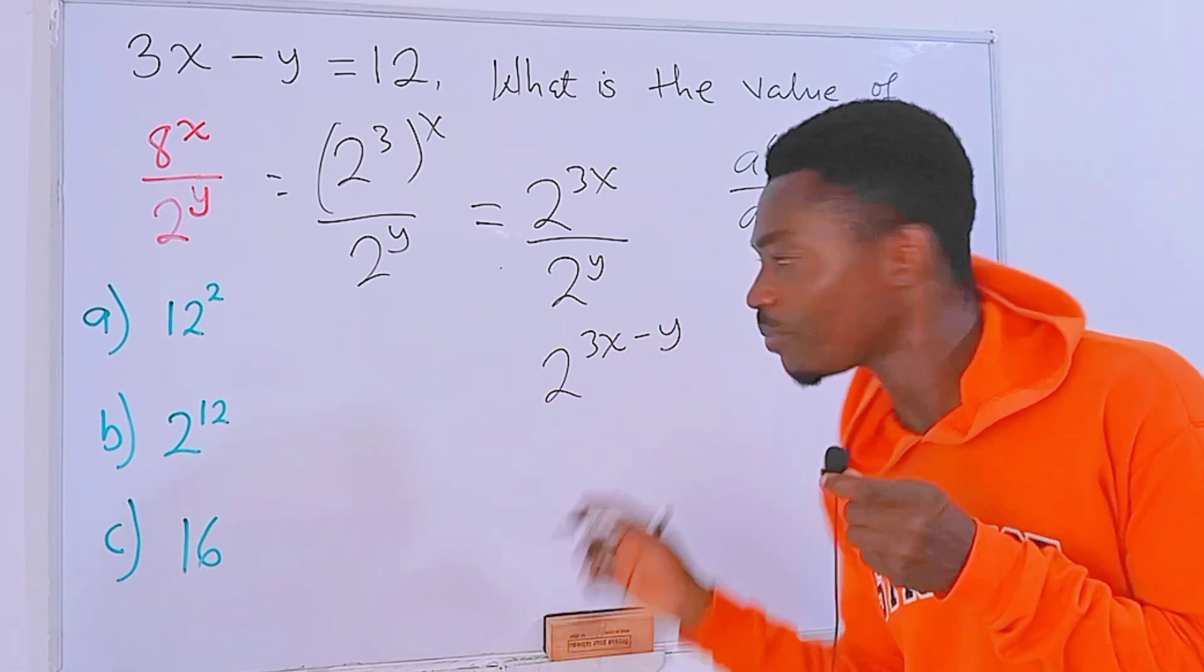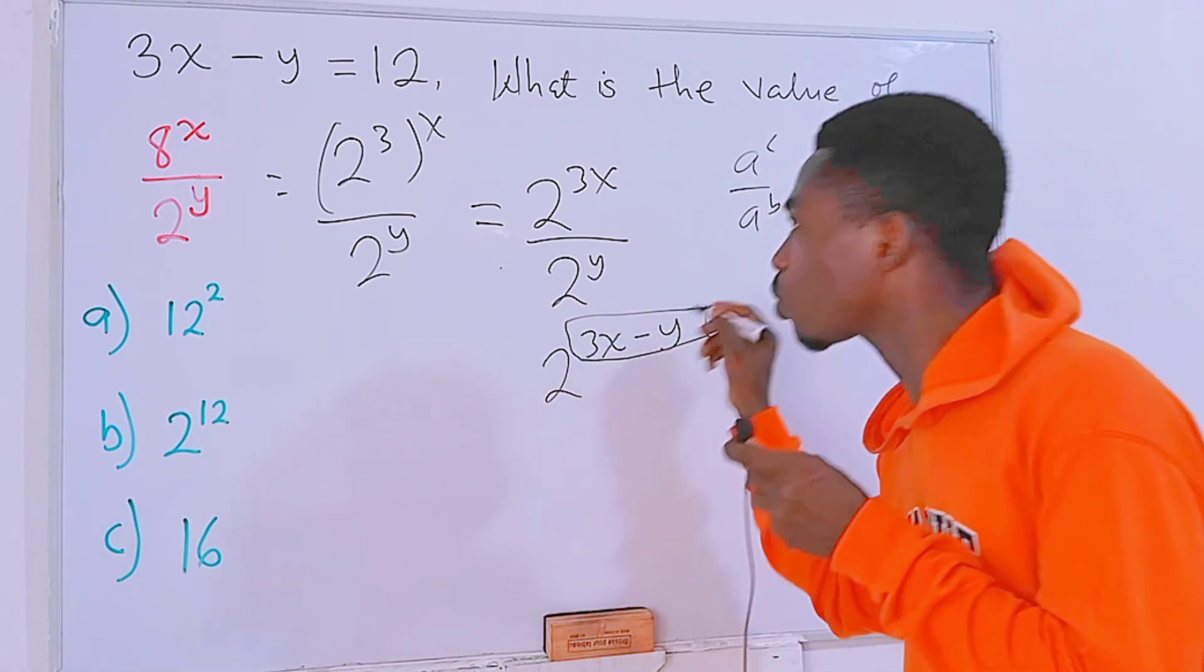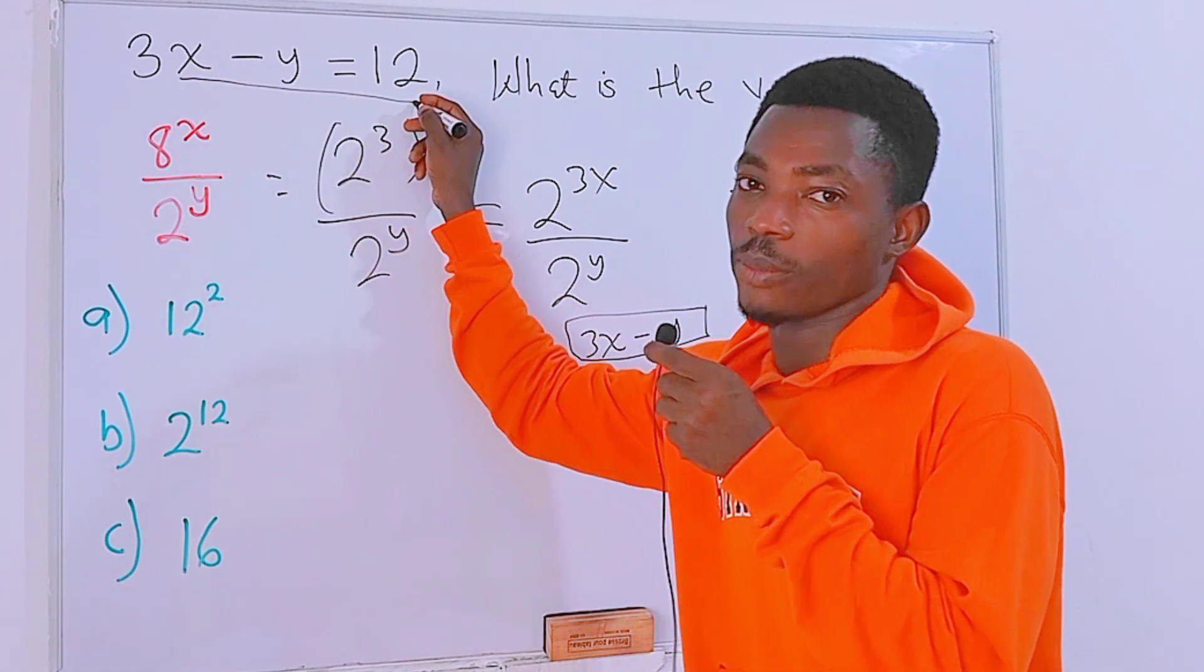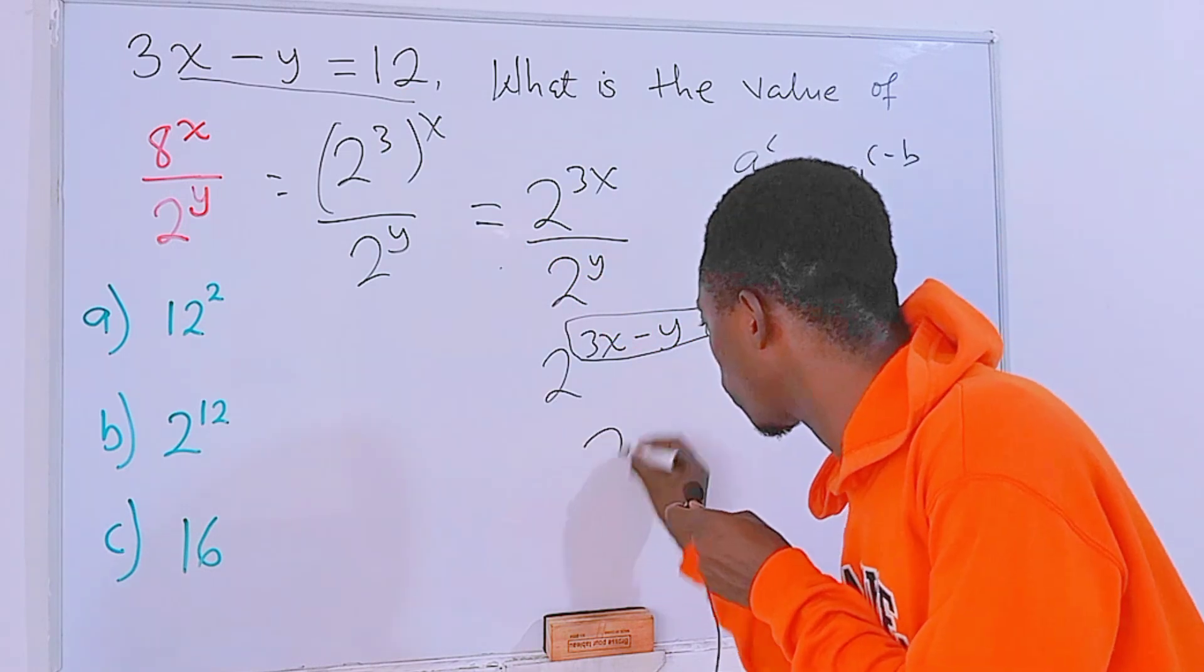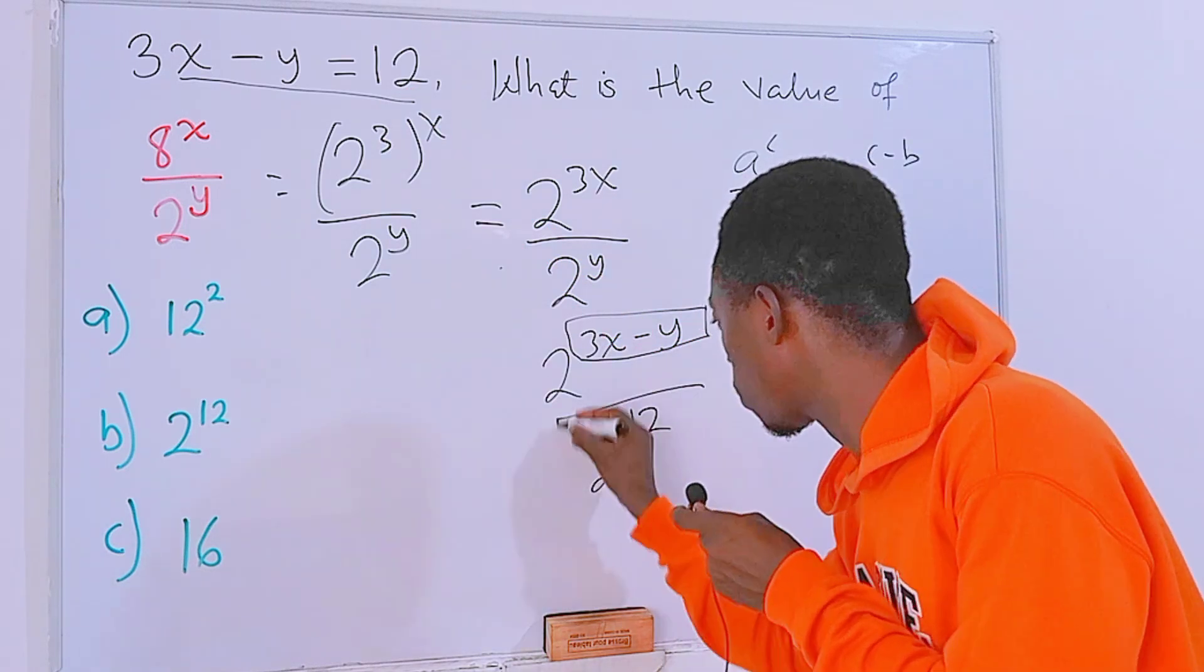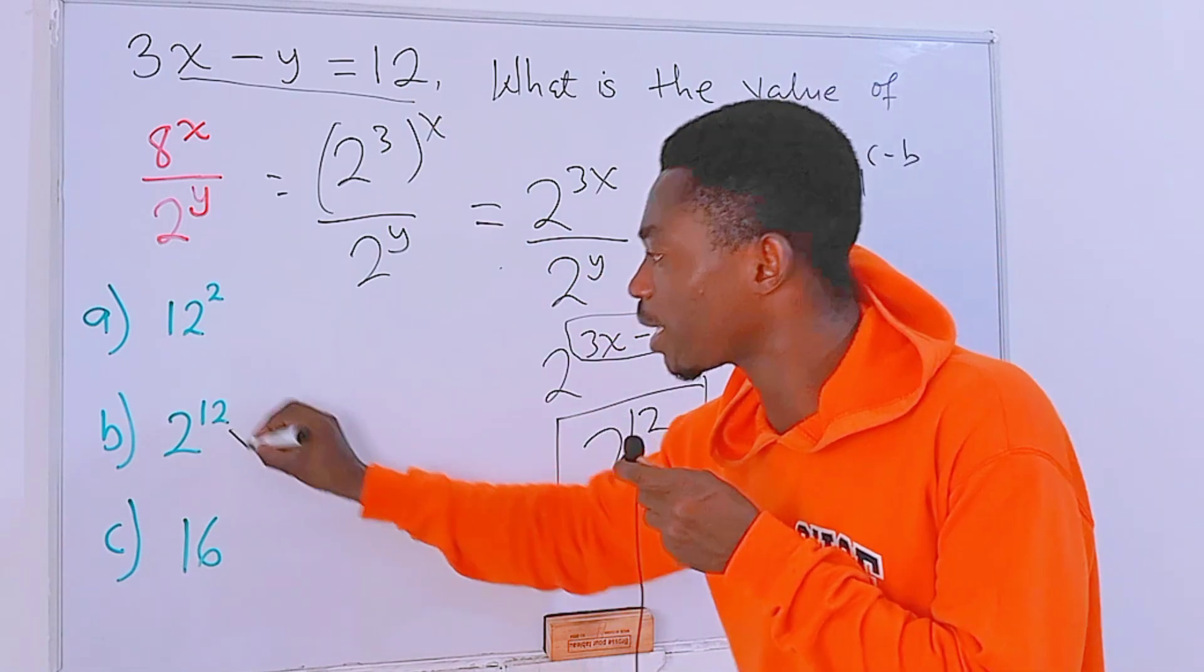Now what can we see? This right here is actually this equation right here. So in place of this, we can actually put the 12 right here so that we will get 2 to the power 12, which is our option b.